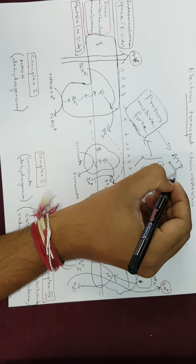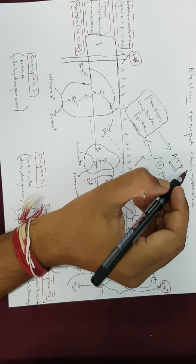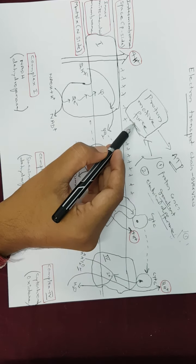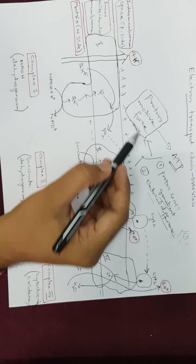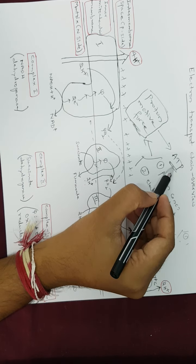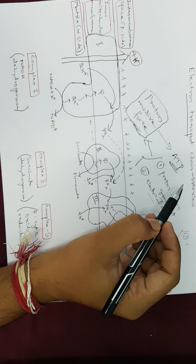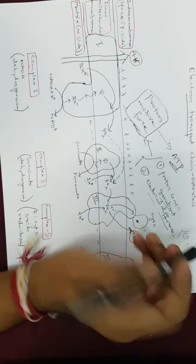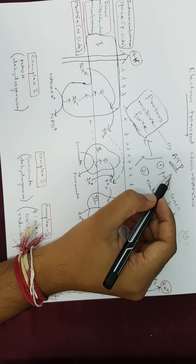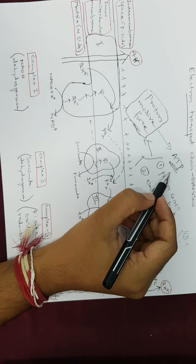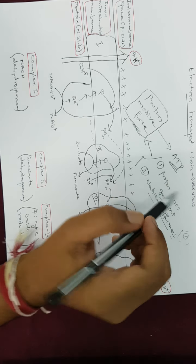Collectively, the proton concentration gradient and the electrical difference together create a force called the proton motive force. By the action of all four complexes, a proton motive force is created across the inner mitochondrial membrane. This proton motive force ultimately contributes to the production of ATP, which we are going to discuss in the next classes.